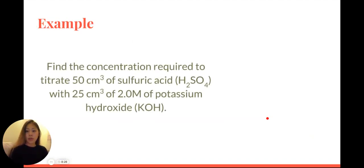So here's an example. Find the concentration required to titrate 50 cm³ of sulfuric acid with 25 cm³ of 2.0 molar of potassium hydroxide. Just looking at this question, we can see that we're given the volume of sulfuric acid, and we're given the volume as well as the concentration of potassium hydroxide.